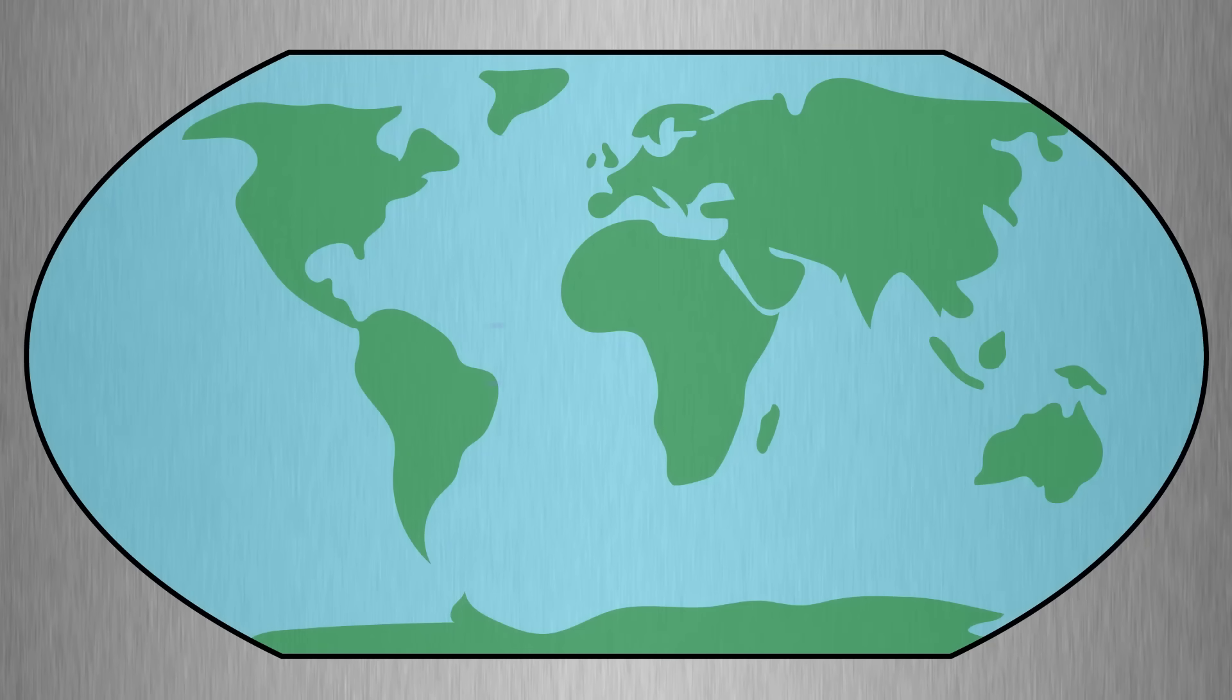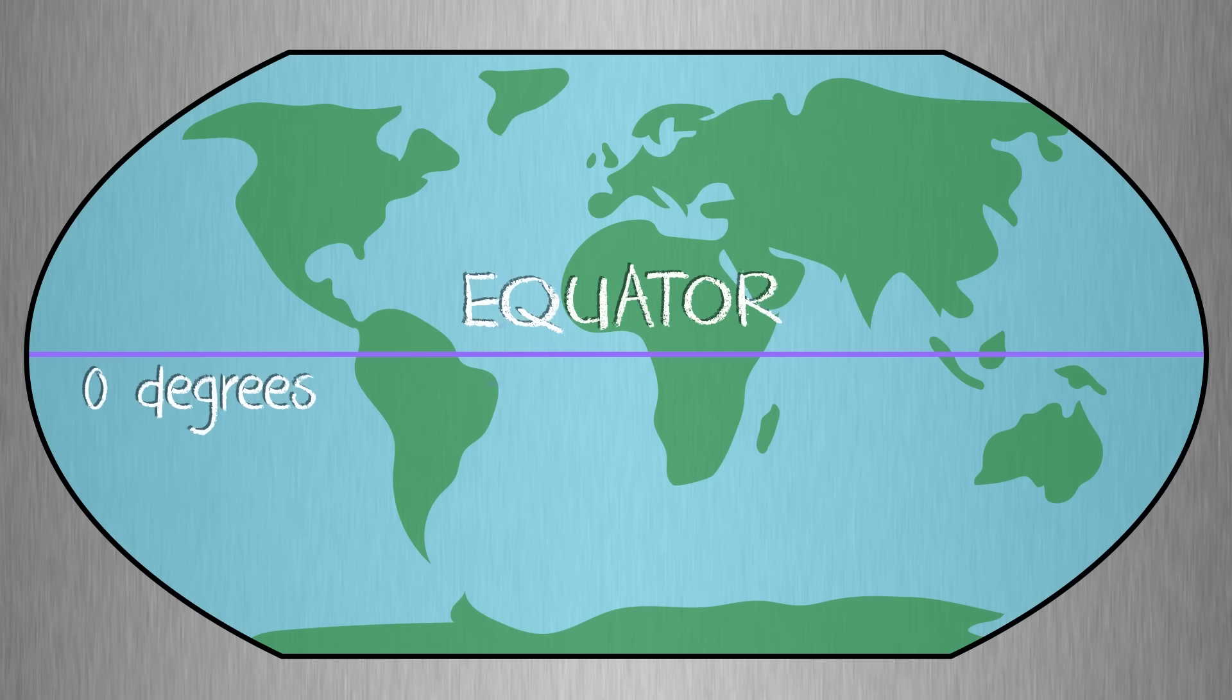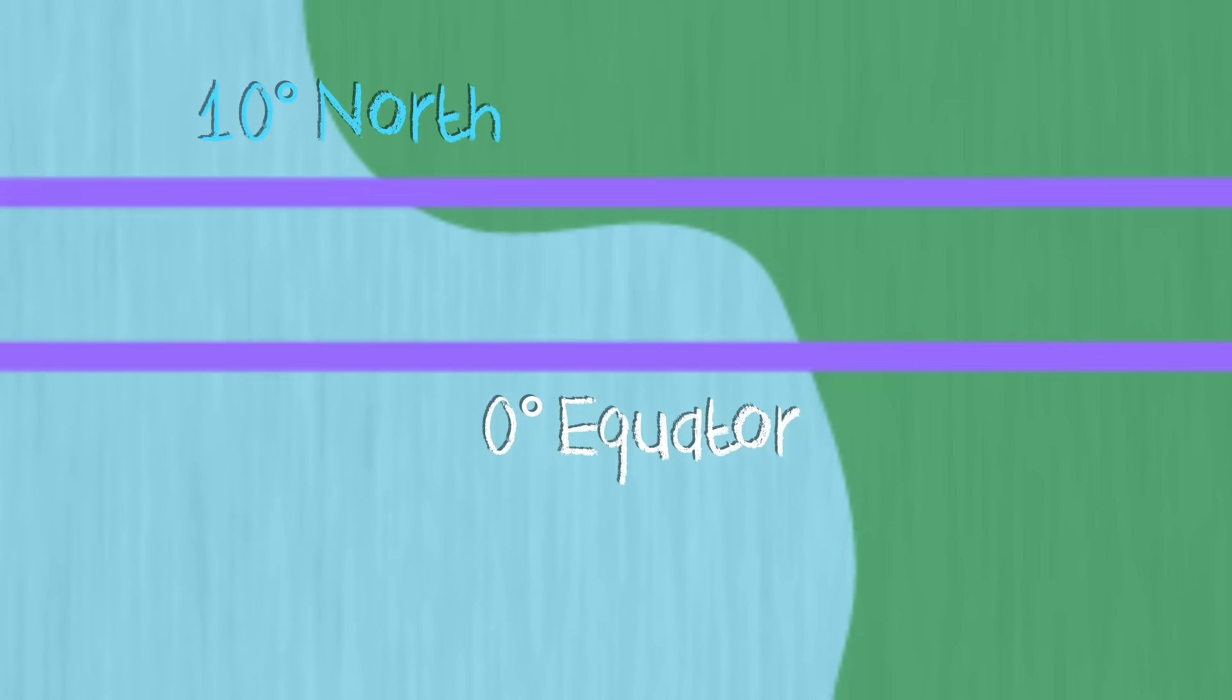Just like the longitude lines, latitude lines are numbered beginning with zero degrees in the center. This is called the equator. Let's label these lines as we did before, starting with zero degrees equator and going ten degrees north and ten degrees south, away from zero.